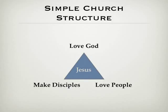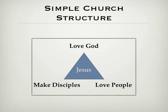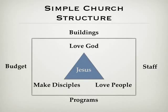To illustrate the more complex — what I call the institutional church structure — I'm going to use a box. What is added in this structure are buildings, staff, and programs. And because these things are expensive, we also have to add a budget. What I'm not saying is that the more complex church needs to be done away with. What I am saying is there's validity in a simple church structure that doesn't have those additional things, but still retains the key elements that we see in scripture as to how we are to be the church.